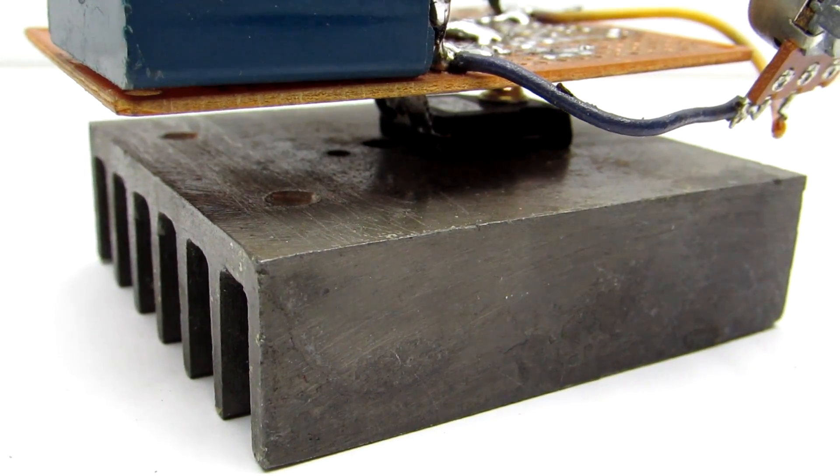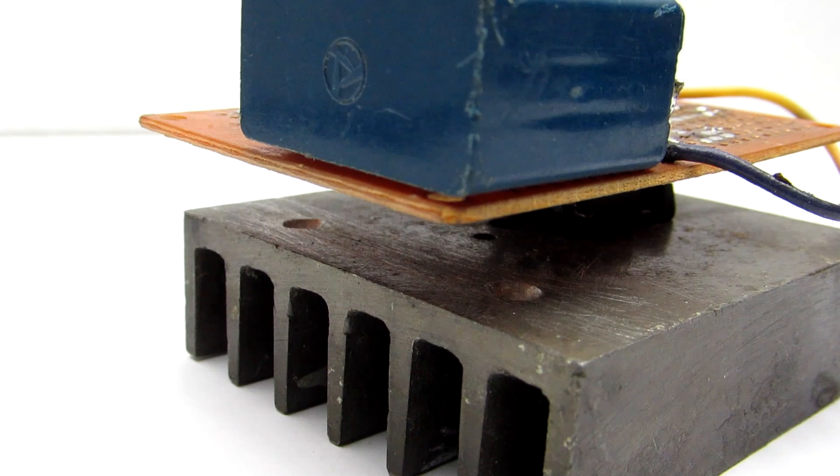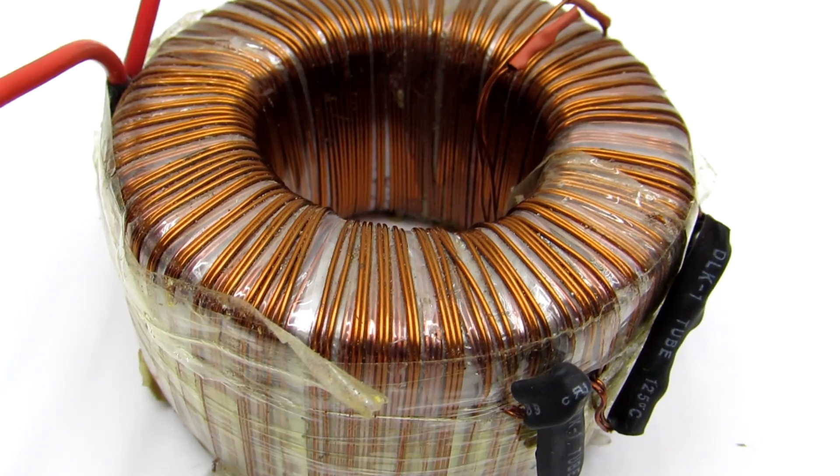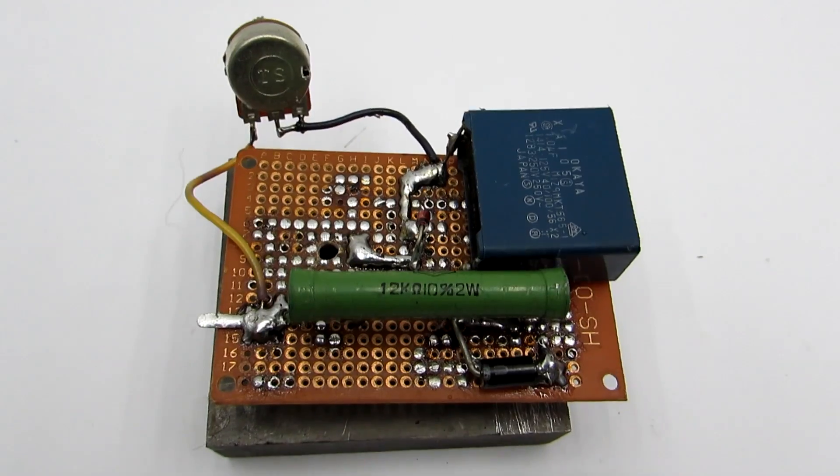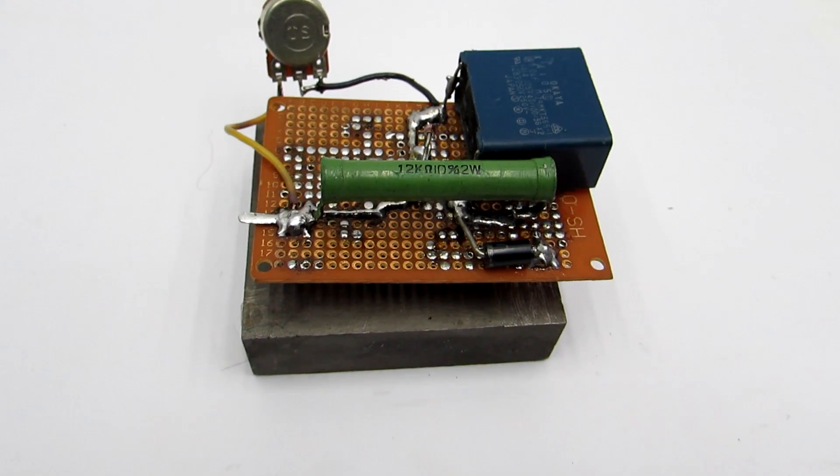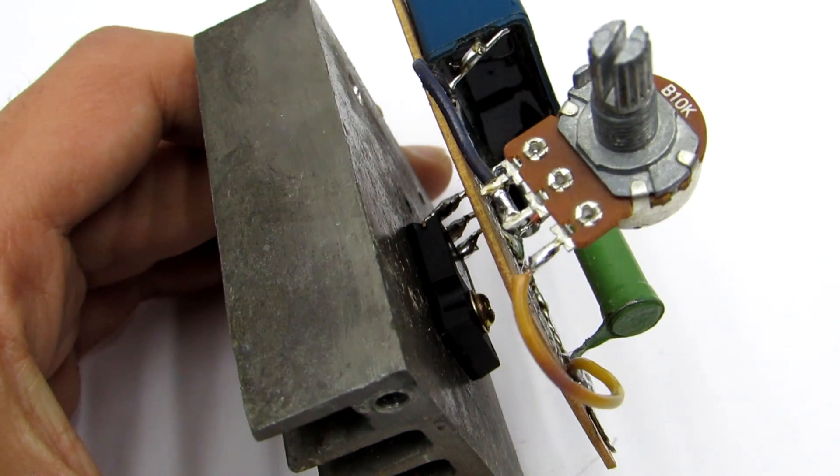The FET must be installed on a radiator. The choke will also warm, so I recommend installing a cooler for the device. Because of the small number of components, there's no need to do a PCB. I collected it on a breadboard.